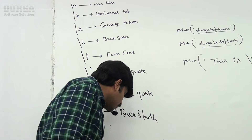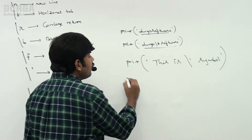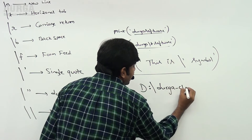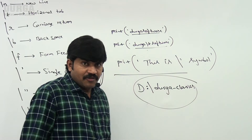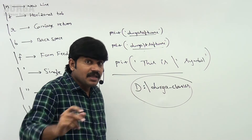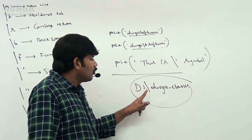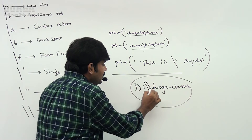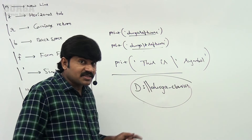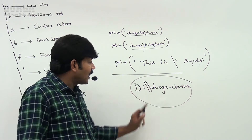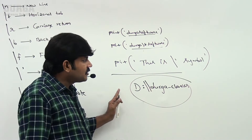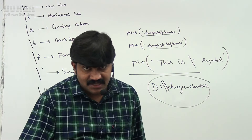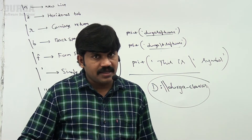Especially, where can we use backslash escape characters? If I want to specify directory locations — for example, 'D:\durgaclasses' — when I use backslash d, it may say illegal escape character. That's why use backslash backslash. Now the backslash is treated as a symbol only, not with internal meaning. These are the various escape characters available in Python, and also in Java, C, C++.